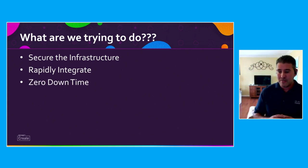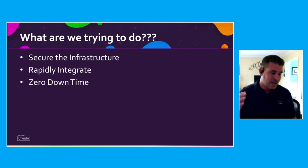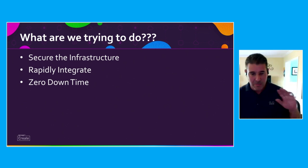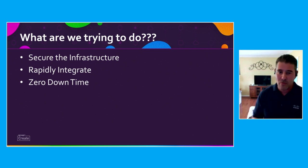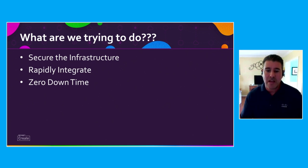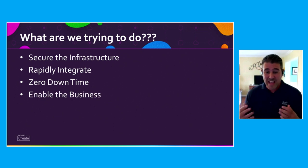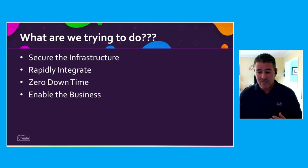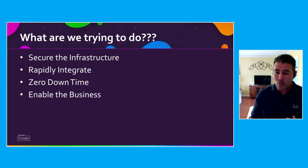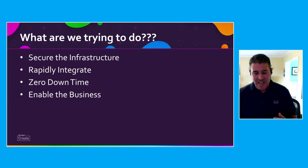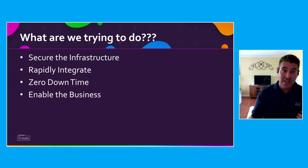We can't do this with any downtime. The days of making changes all week and not pushing security policy until Sunday morning are gone. We need to be better, faster, quicker, and we can't cause any downtime while doing so. The reason we do this is to enable the business, because the application is really the business. If we take it down or we're a bottleneck, the business suffers. So we need to rapidly integrate with no downtime and secure the infrastructure while the application serves the business.